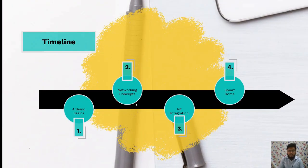Coming to the course outline — this is what we will do. We'll start with Arduino basics. Arduino is a hardware platform and we will learn the basics of Arduino first. Then we will see the networking concepts, which is really important. Then we'll see how to integrate IoT with Arduino, which is like integrating software and internet with hardware. We'll end up making a smart home with all the knowledge we have learned throughout the course.